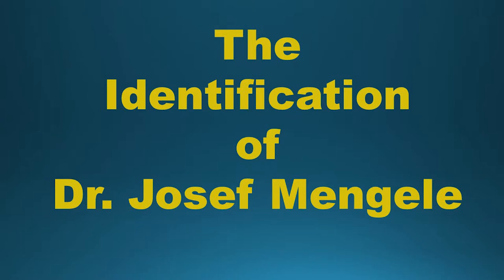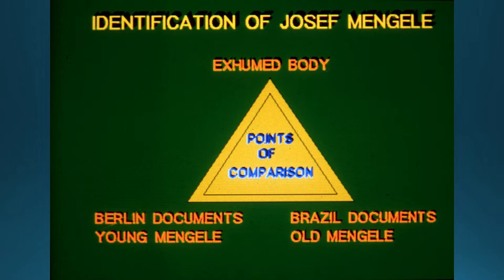After putting all these things together, I took a lot of time — not only in São Paulo, but also when I came back. I asked our colleagues to come to Wilmington to my office, and we spent about four or five days here working. We had a triangle of evidence: the exhumed body, the Berlin documents, and the Brazil old-Mengele material from the Bossert family. These were the three pillars of documents we had to put together in order to arrive at the final and definitive identification.